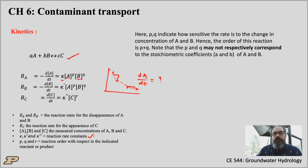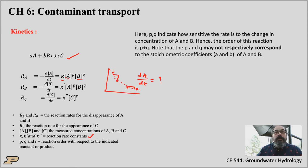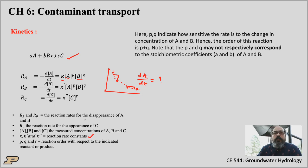K is the reaction rate constant for species A. K-prime is the reaction rate constant for species B — in this case the same, since A and B disappear at the same rate. Each species has its own reaction rate constant. The order of the reaction with respect to a given species is given by P, Q, and R. Zeroth order is when concentration decreases linearly with time — K is constant and dC/dt does not depend on concentration.